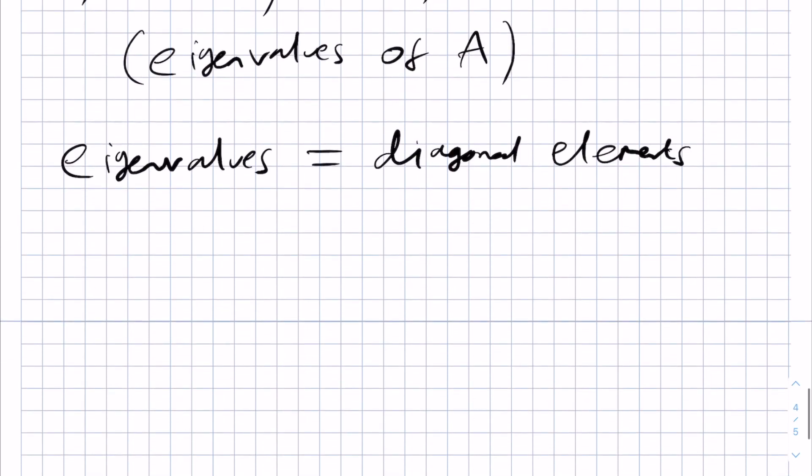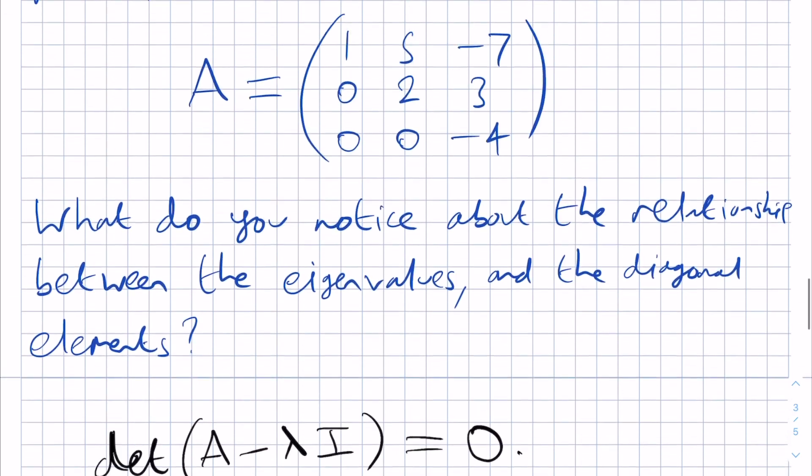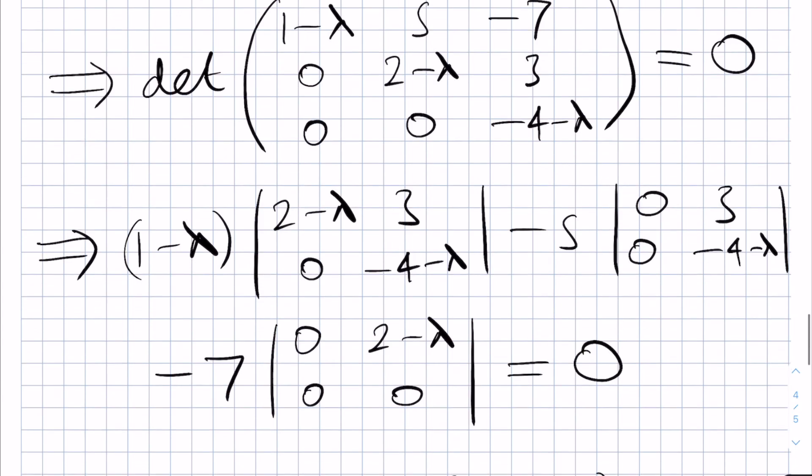The same results are true for a lower diagonal matrix as well where all of the elements above the leading diagonal are 0, i.e. these elements here need not be 0 but these elements here would need to be 0 for a lower diagonal matrix.